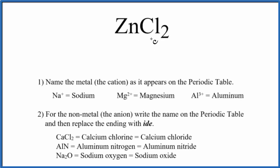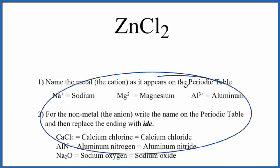To write the name for ZnCl2, we need to recognize that we have a metal and a non-metal. In general, when we have metal and non-metal, that's going to be an ionic compound. Specifically here, we have two different types of elements, so it would be a binary ionic compound, and we'd use these rules here to write the name.